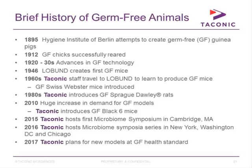In the early 1960s, Taconic staff traveled to the Lobund Institute to learn how to produce germ-free mice and began offering Swiss Webster outbred mice. In the 1980s, Taconic added germ-free Sprague-Dawley rats. In 2010, there was a huge increase in demand for germ-free mice, and Taconic introduced the Black 6 mouse at the germ-free health standard. In 2015, Taconic hosted its first microbiome symposium in Cambridge, Massachusetts. In 2016, one symposium was held in New York with two more planned, and in 2017, Taconic planned new models at the germ-free health standard.